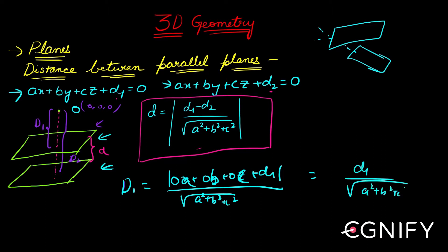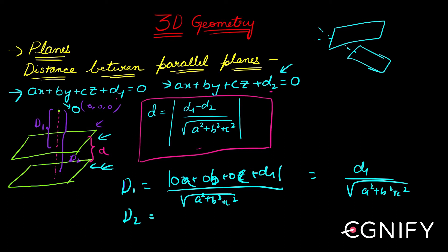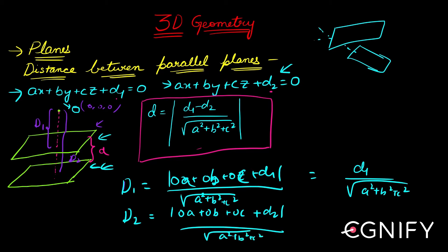Similarly, capital D2 is the distance of the origin from the second plane. You put the origin into the equation of that plane: mod of (0·a + 0·b + 0·c + d2) divided by √(a² + b² + c²), which gives d2 divided by √(a² + b² + c²).